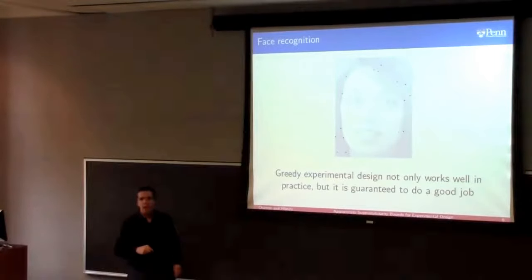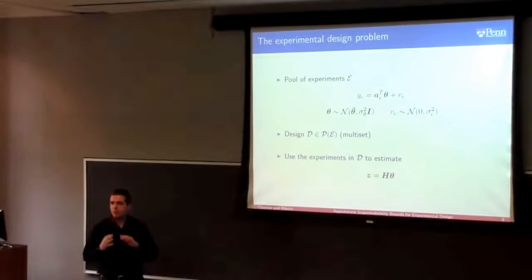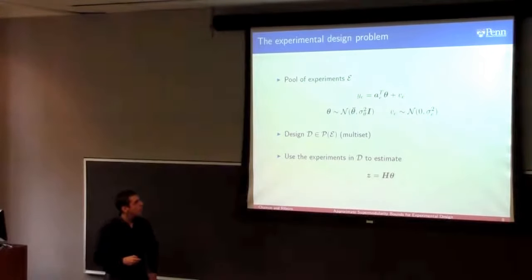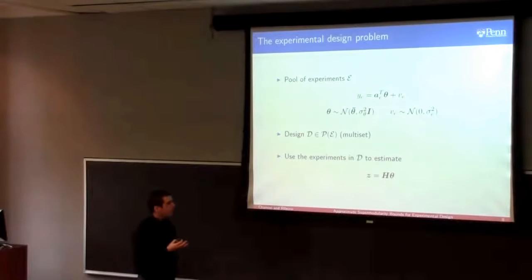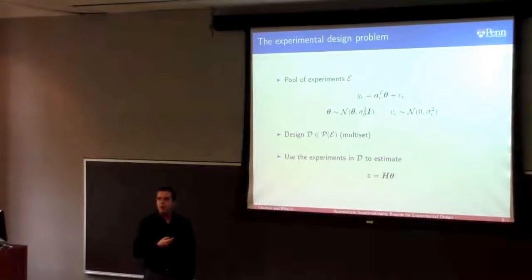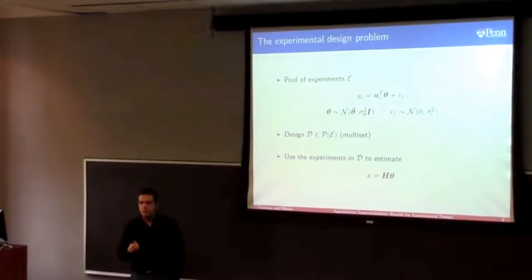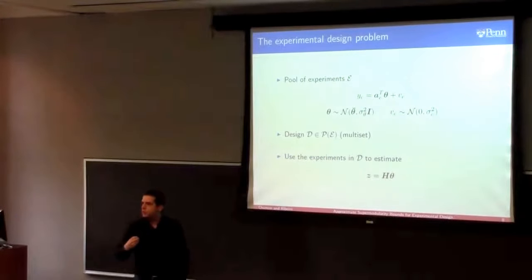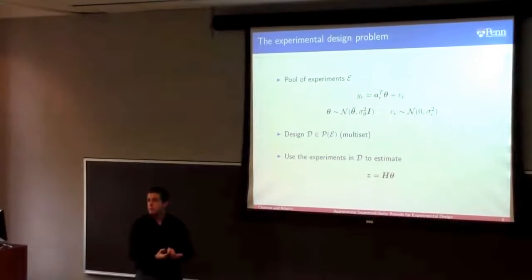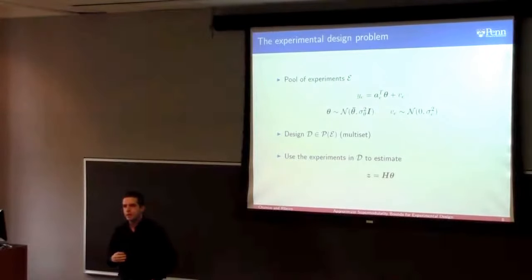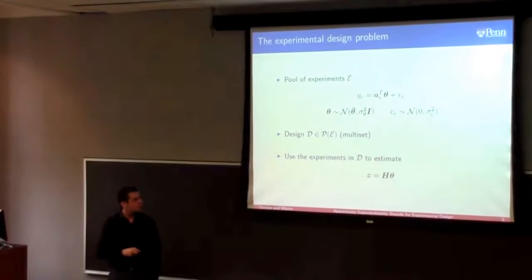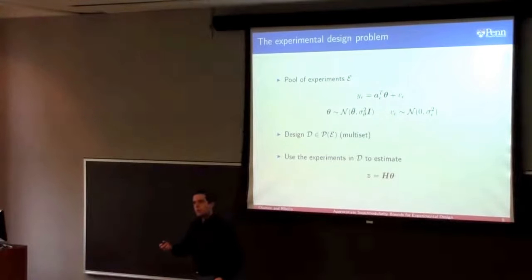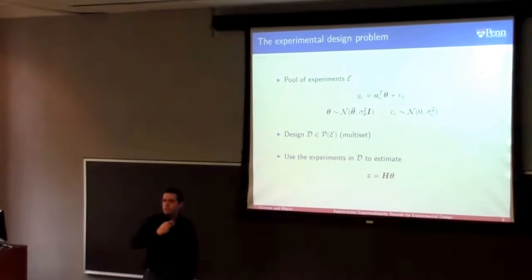To formalize the experimental design problem: we are given a pool of experiments — in the sketching case, the pixels in the picture — which are linear noisy observations of some parameter theta we are interested in. We are given experiments and priors on both the noise and the parameter, and we want to find a design D, which we allow to be a multi-set. The reason we allow for that is because there may be very informative but noisy experiments that you might want to repeat to improve their SNR. Our goal is to use these experiments to estimate some linear combination of theta — either theta itself, or some output of a linear transformation, such as a classifier represented by matrix H.